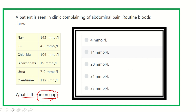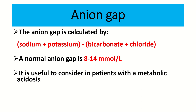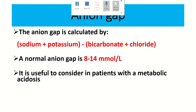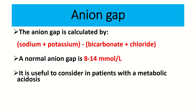The anion gap is calculated as: (sodium + potassium) minus (bicarbonate + chloride). Sodium and potassium are the cations; bicarbonate and chloride are the anions. The difference between them is the anion gap, and normally this anion gap is 8 to 14 mmol/L.